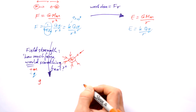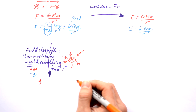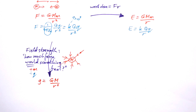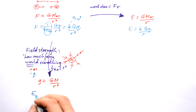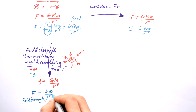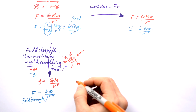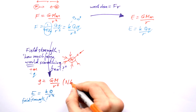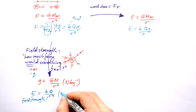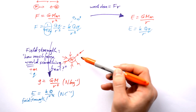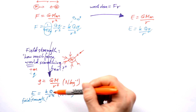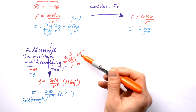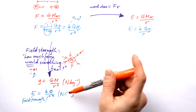Gravitational field strength, given the letter little g — and for Earth that's 9.8 metres per second squared — is G M over r squared; I've gotten rid of the little m. Similarly for electric field strength, which we give the letter capital E (it is field strength, not energy), it's K Q over r squared. The unit for field strength is always newtons per something: newtons per kilogram for gravitational fields, and newtons per coulomb for electric field strength. So field strength involves only one mass or one charge — the one producing the field.